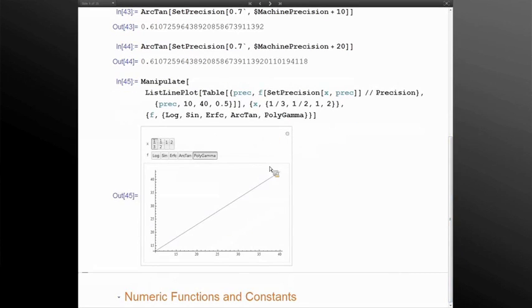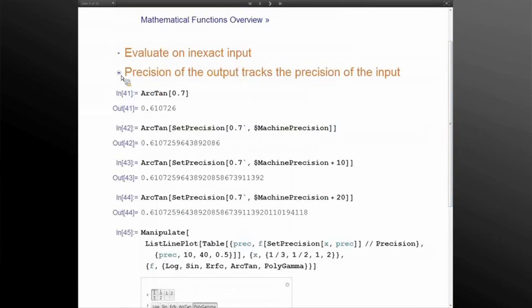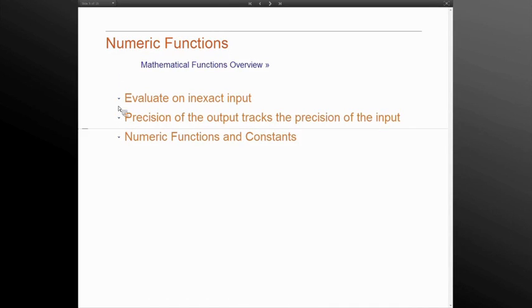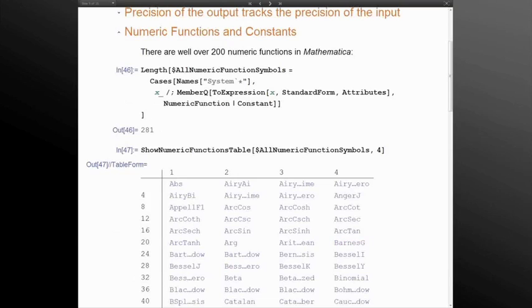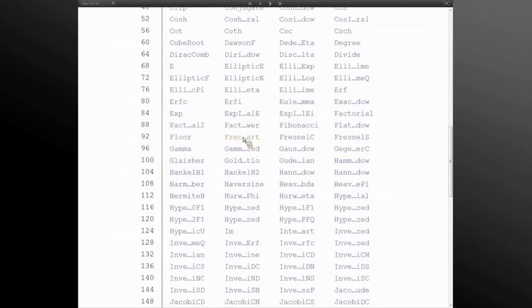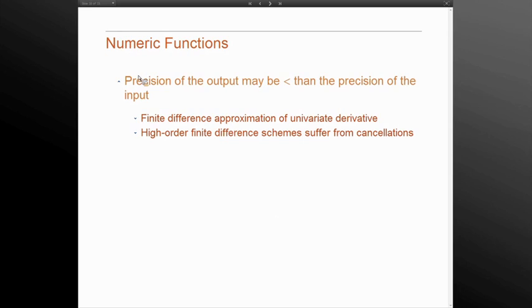That allows us to evaluate an explicit exact number to a requested number of digits by essentially feeding it arguments which are more and more precise. The total number of numeric functions in Mathematica is well over 200. We can extract them all in the system context, all those numbers which have attributes in the numeric function are constant. This is the entire list which is clickable into documentation.